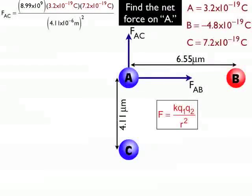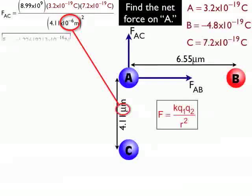It's 4.11 times 10 to the negative 6 meters. The negative 6 comes from the micron symbol, that means times 10 to the negative 6. Then I'll do a little bit of math. I get 1.226 times 10 to the negative 16 newtons as the force between A and C.